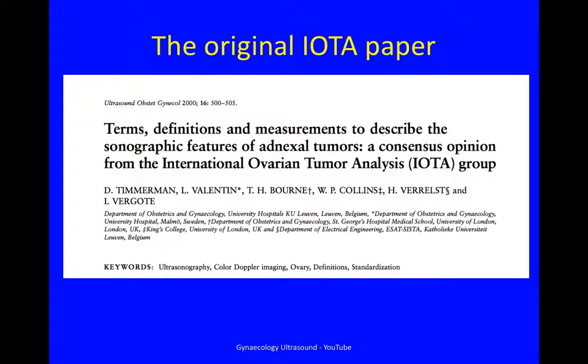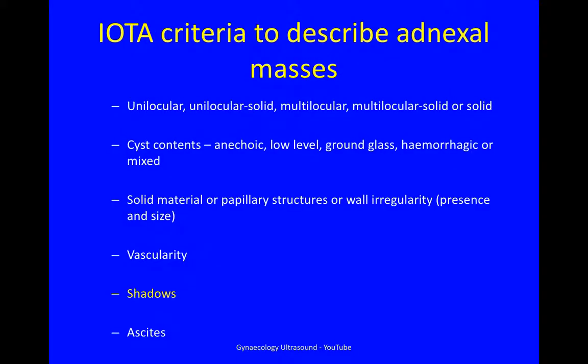This was the original IOTA paper from 2000, but there have been many more since. These are the various criteria used to describe adnexal masses, and today we're going to be talking about shadows.